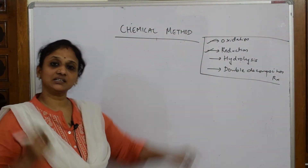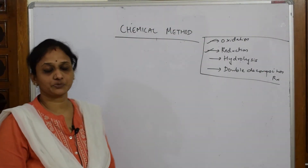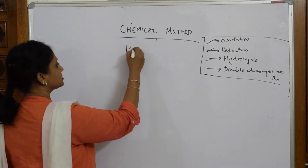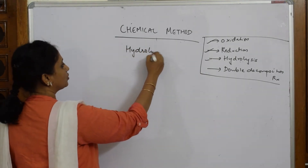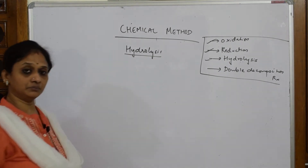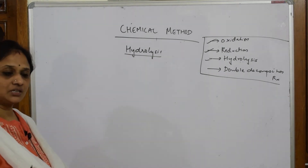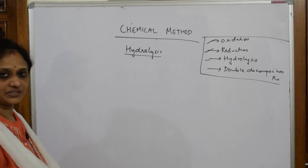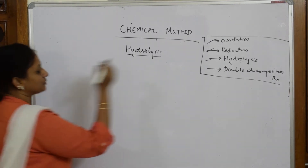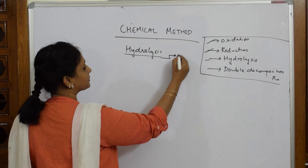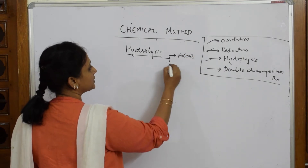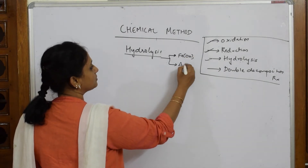Let us come back and learn the hydrolysis process. Whenever we speak about hydrolysis, it is nothing but the addition of water. By using water in the reaction, basically by the hydrolysis process, you can easily prepare hydroxide — ferric hydroxide and aluminium hydroxide.